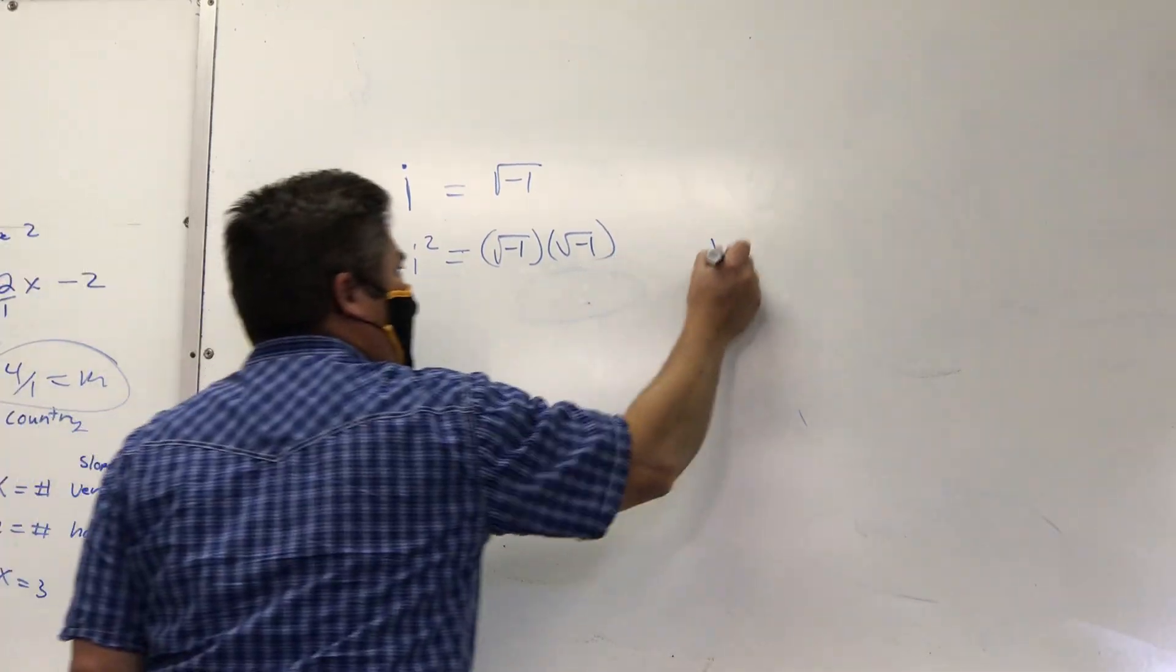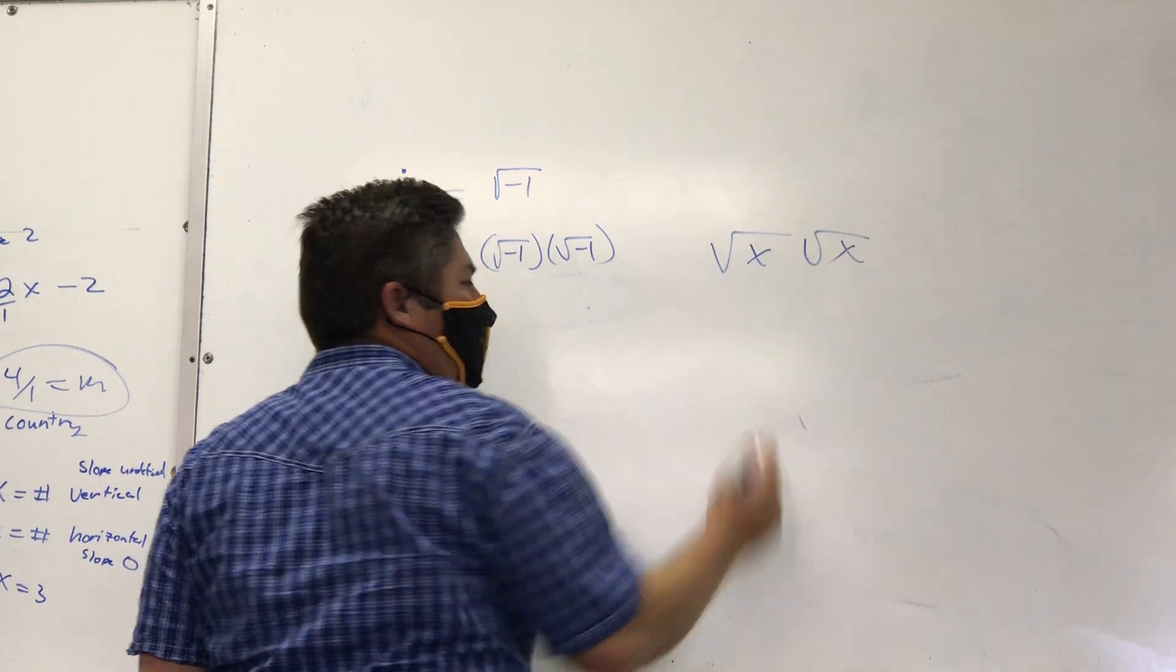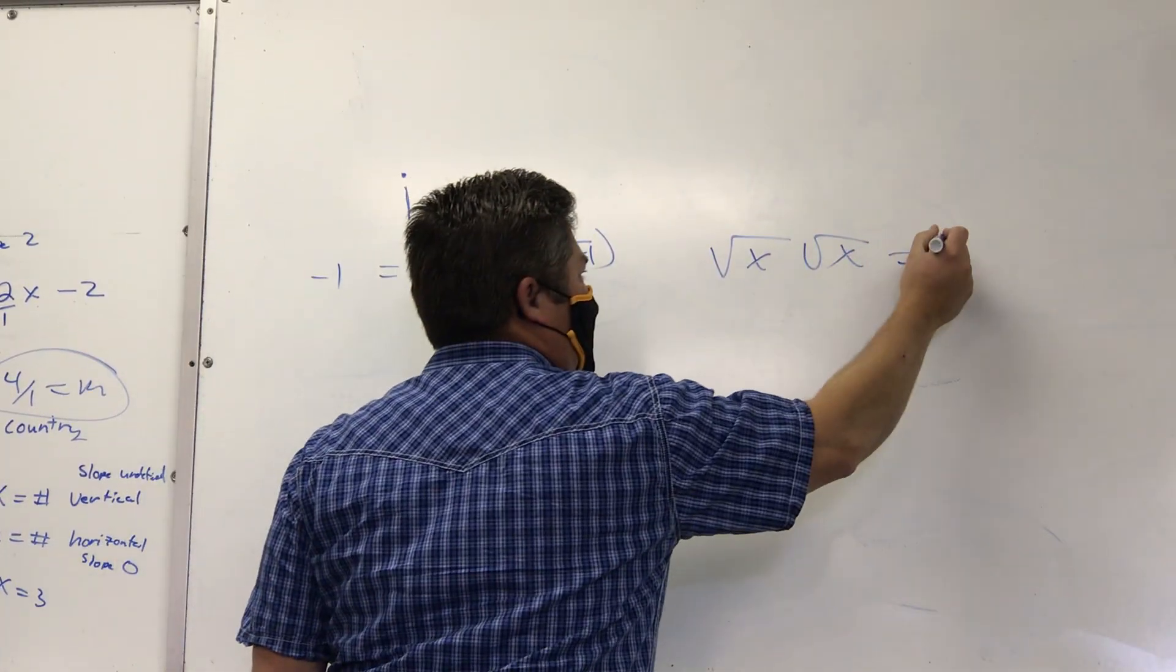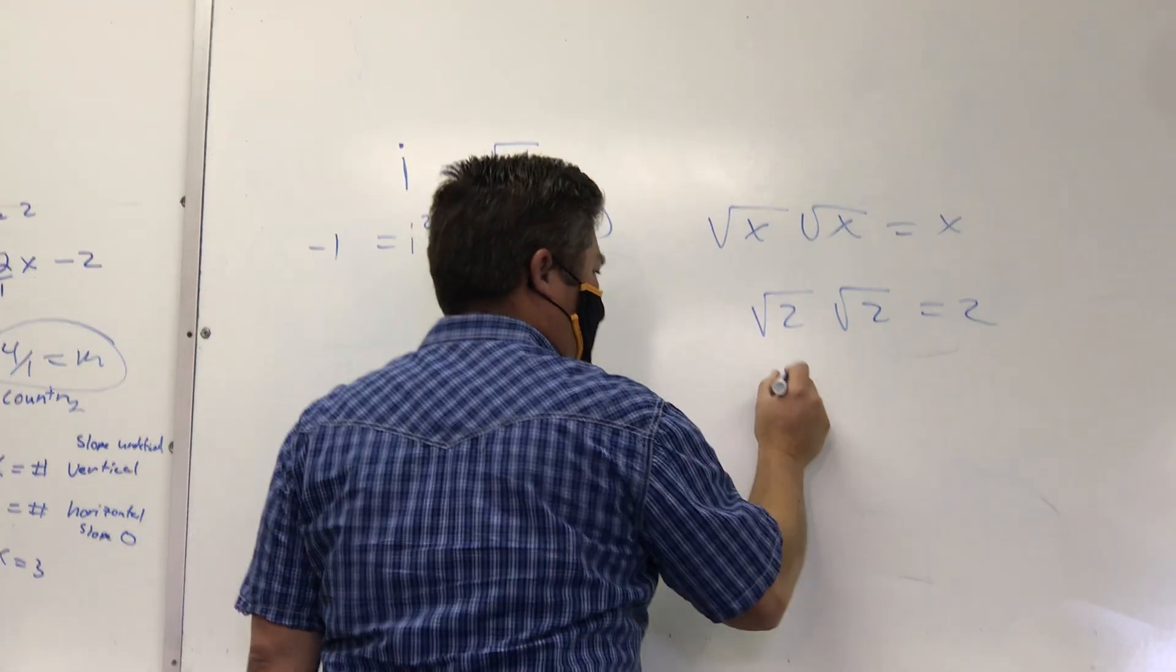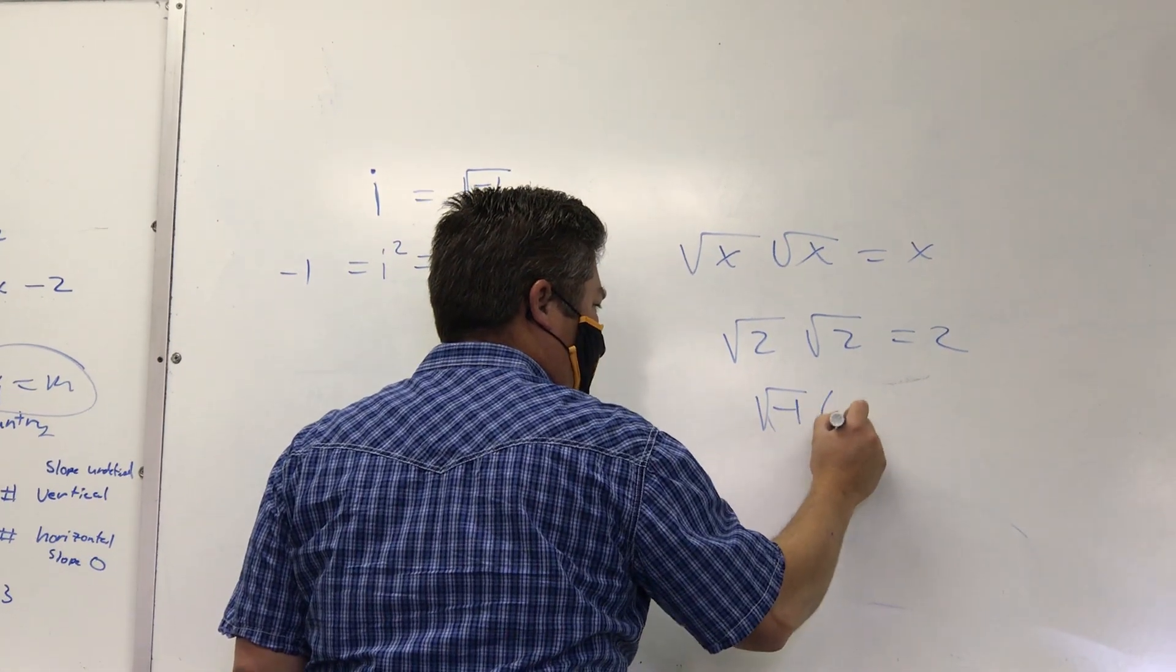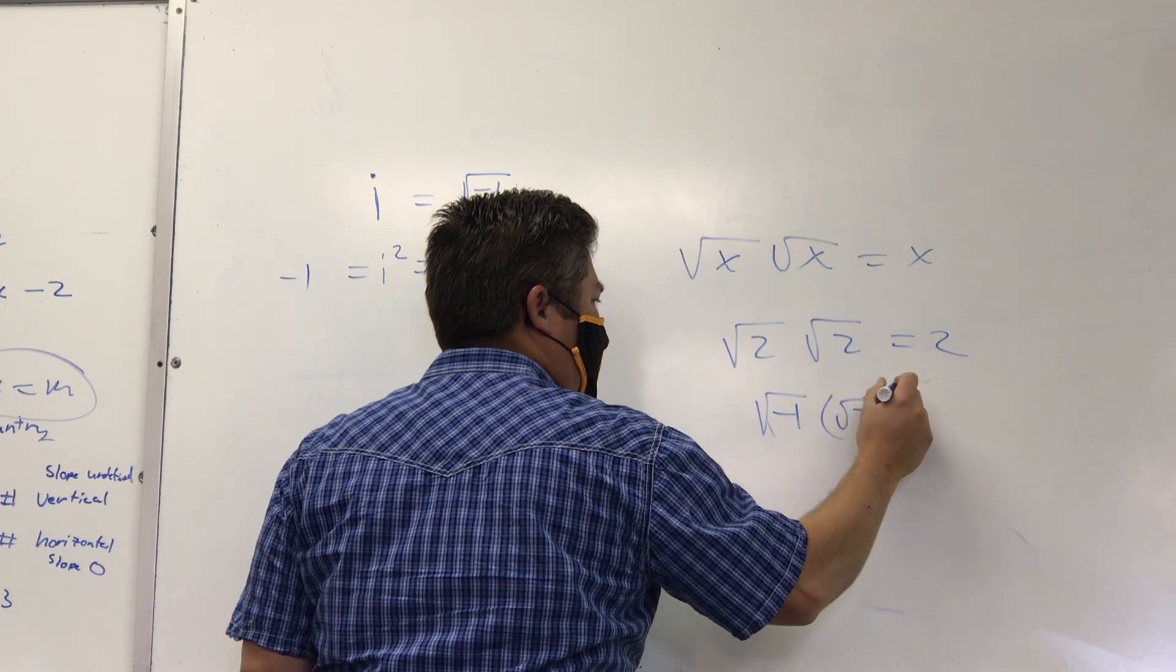Think about this. What's the square root of x times the square root of x? X. What's the square root of two times the square root of two? Two. So what's the square root of negative one times the square root of negative one? Yeah, it's just negative one.